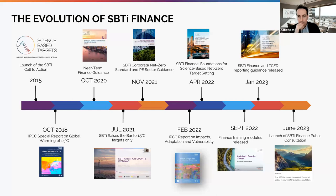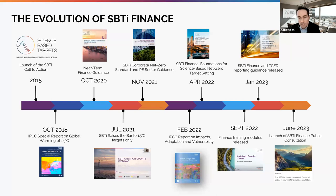That framework has defined best practice among financial institutions globally for setting science-based targets. Since we published it, we've published our corporate net-zero guidance, which is being used to assess companies' net-zero targets. Last year, we published a foundations document for financial institution net-zero target setting, and some guidance for financial institutions to coordinate their TCFD reporting with their SBT process. On the 15th of June last month, we published the three consultation documents we'll be talking about today.